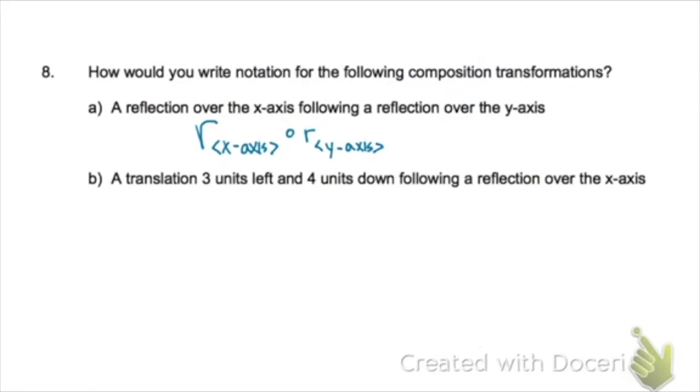Remember when you're doing a composition that whatever comes first is actually written second behind the circle. So this one is a reflection over the y-axis followed by a reflection over the x-axis. Okay, so this one says following, so the x-axis is written first. On B, a translation 3 units to the left and 40 units down, following. This is the one that's actually being done first, because this one is following the other one.